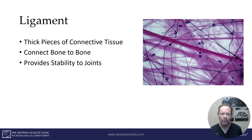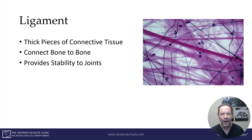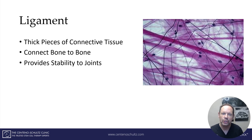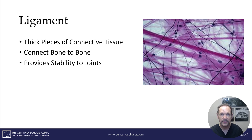So a ligament, in the simplest of terms, is a very thick piece of connective tissue. It spans from bone to bone, so it connects the two, and in doing so provides critical stability to joints.